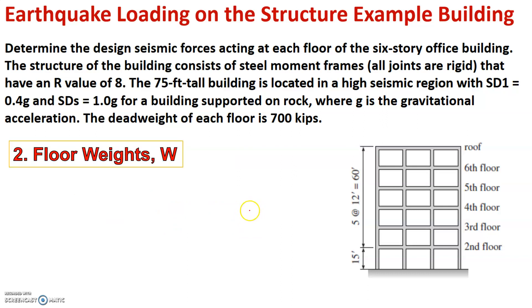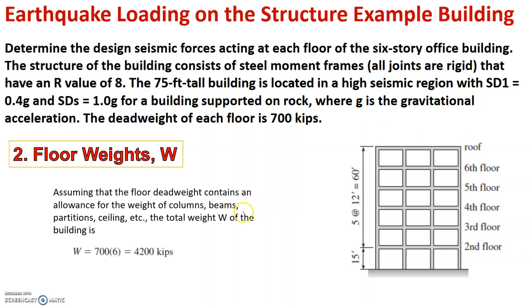Next the quantity that we need to calculate are the floor weights. Now it is given in the question that the dead weight of each floor is 700 kips so we do not have to do any calculation.